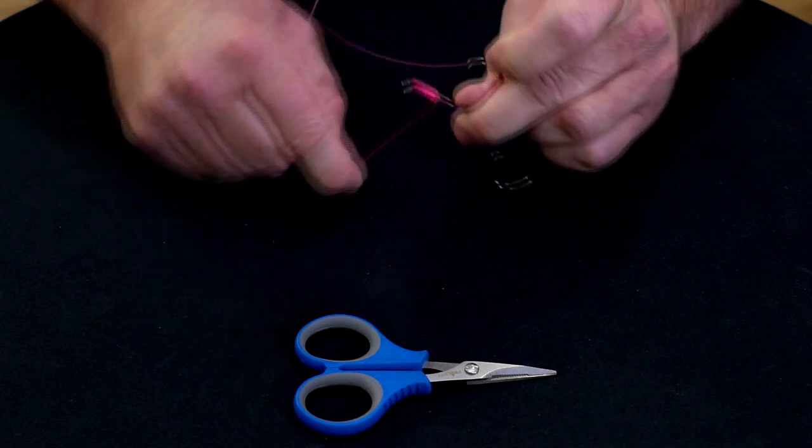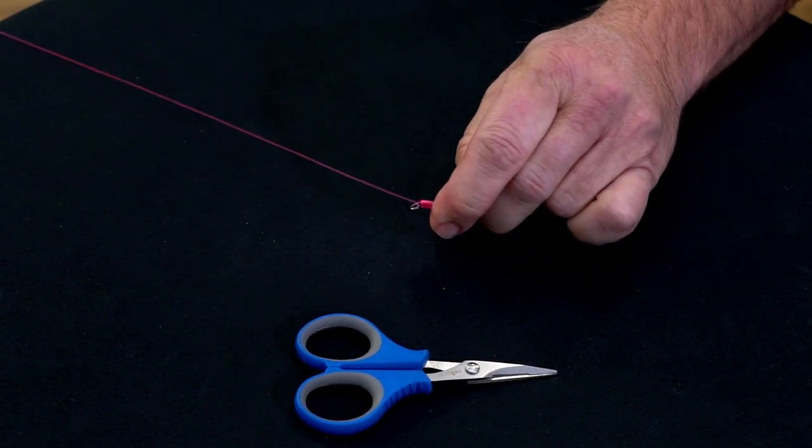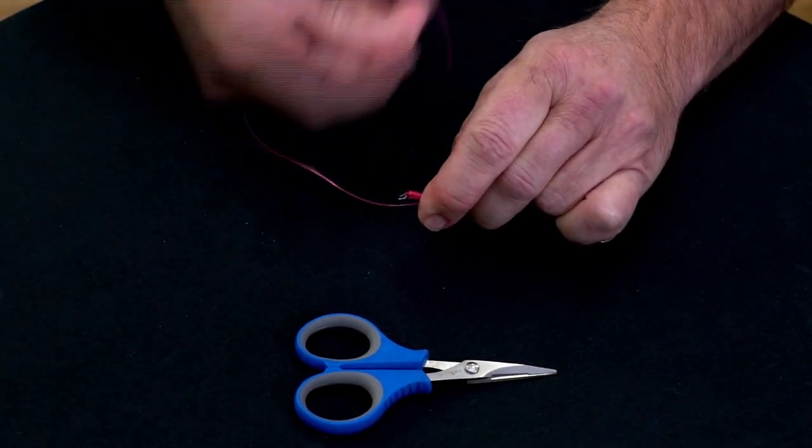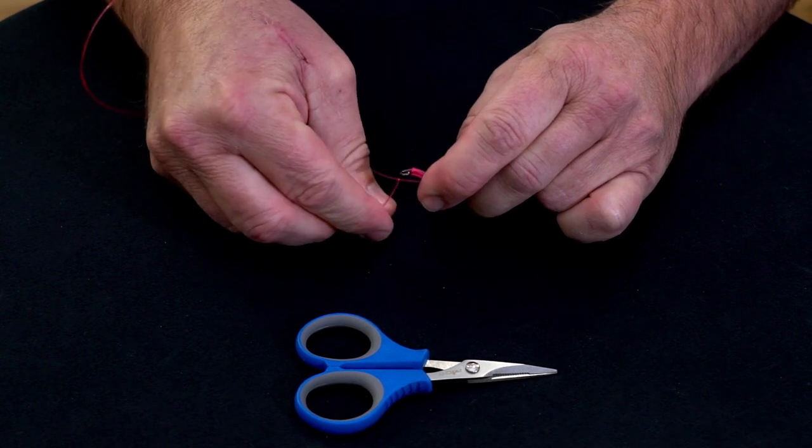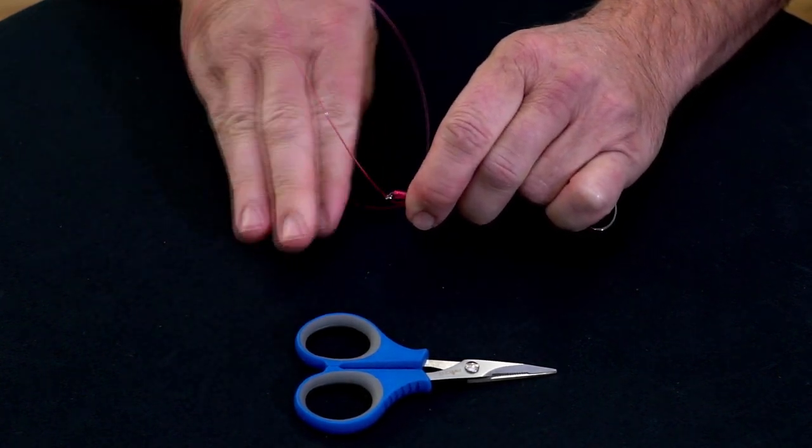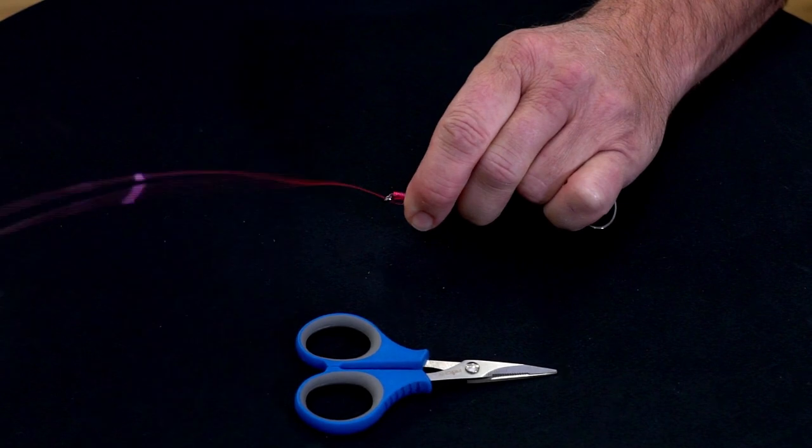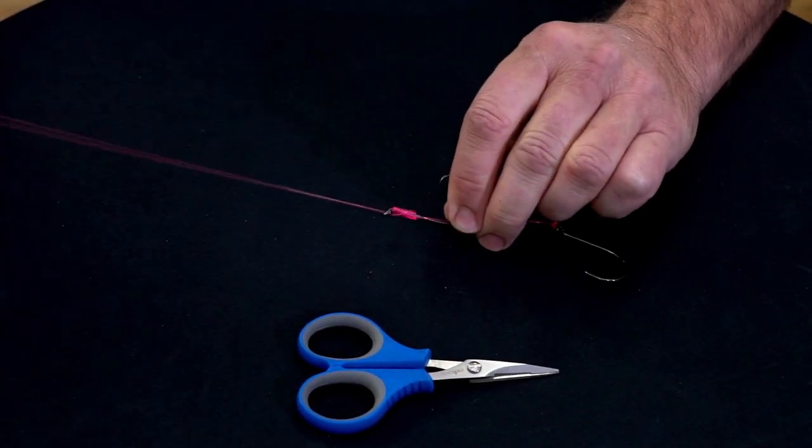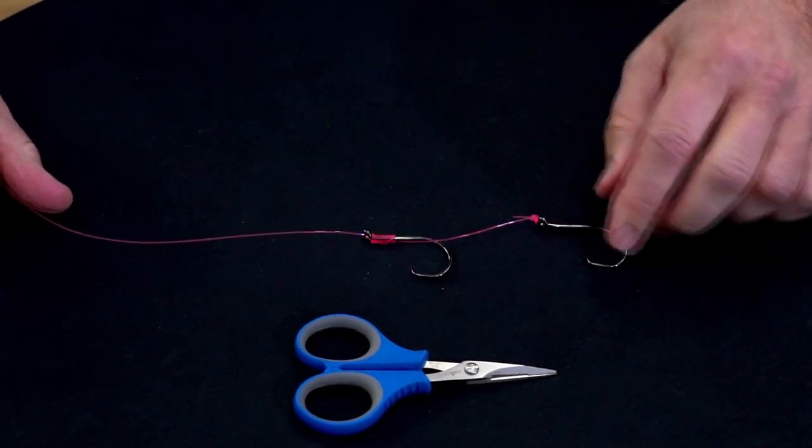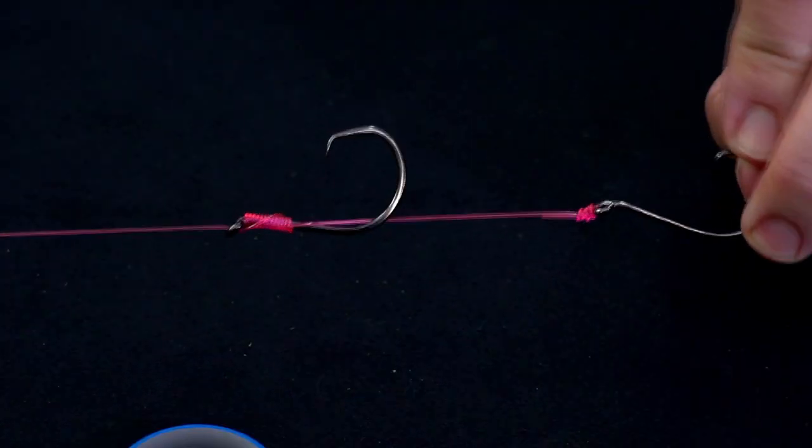Then pinch that with your finger, grab the end of your leader and put it through the eye, and just hold it nice and tight, pinch it up and pull, and that locks that in place. You'll see that is beautifully locked in place.